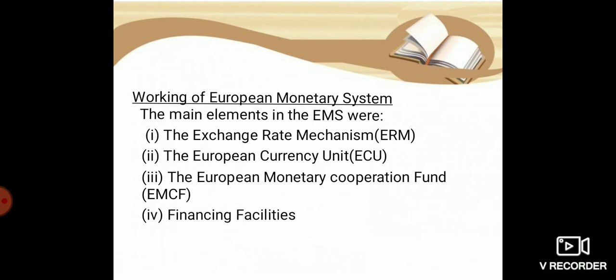The second element is the European Currency Unit (ECU). The ECU was a basket of currencies of European Community member states, used as the unit of account for the European Community before being replaced by the euro. It was introduced as a unit of account on the formation of the EMS in 1979. Its value was equal to a weighted average of member countries' currencies, with weights assigned according to each country's relative GDP and intra-community trade.